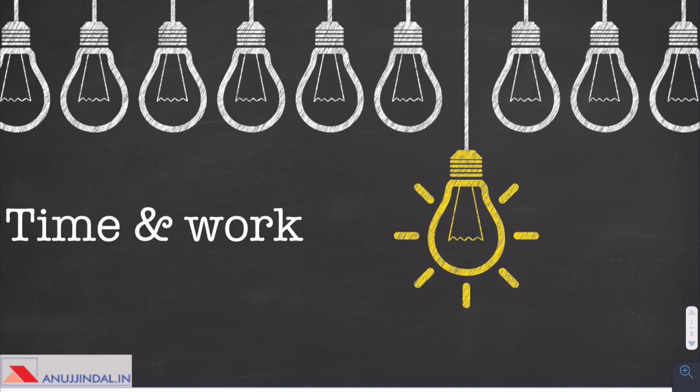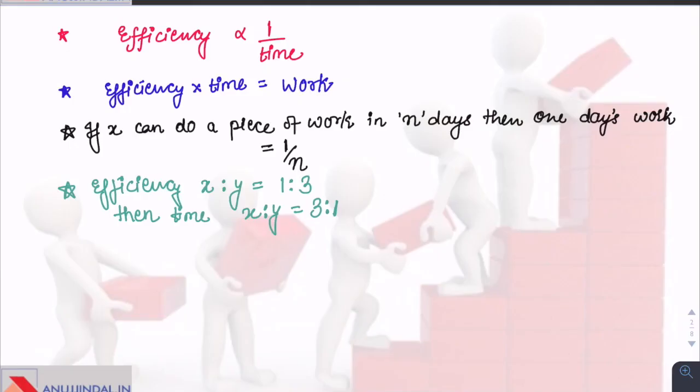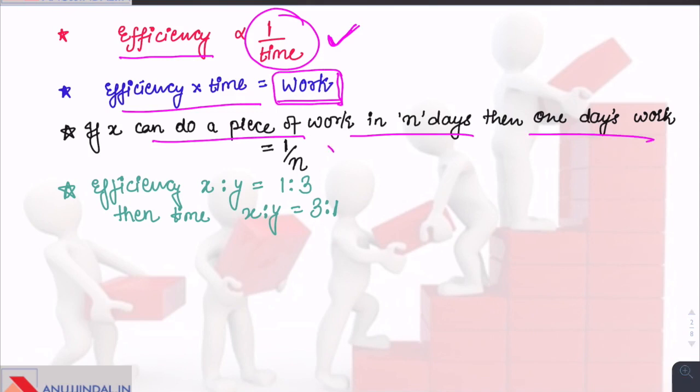Before getting started with questions, let us revise some basic concepts. Firstly, efficiency multiplied by time gives us the total work done by an individual or group of people. And we know that efficiency is inversely proportional to time given or time taken to complete a work. If X can do a piece of work in N days, then one day's work of X is 1 by N. If efficiency is given in the form of ratio and it is 1 is to 3, then the time taken by X and Y would be 3 is to 1, which will be inverse of the given ratio.